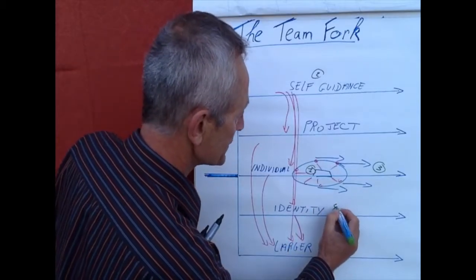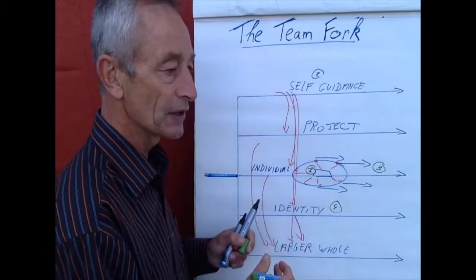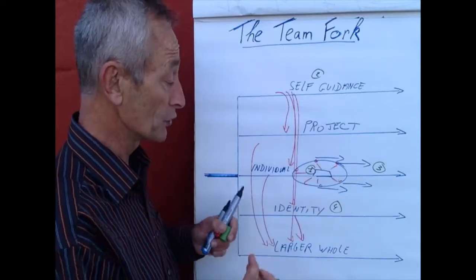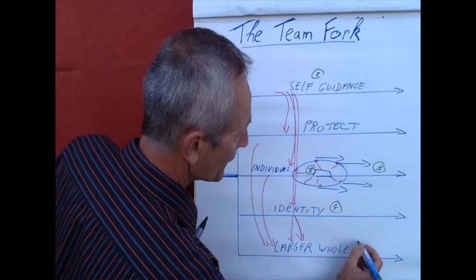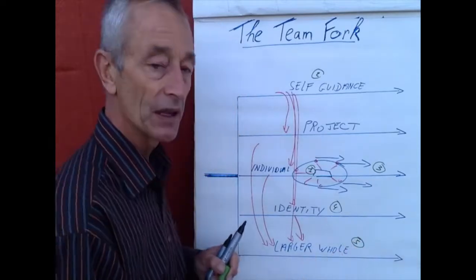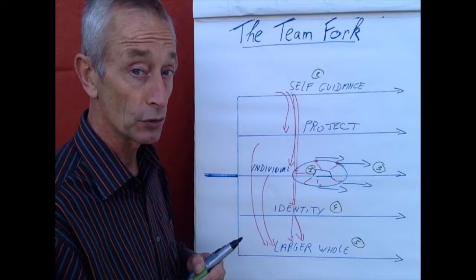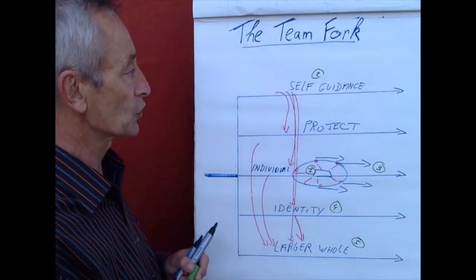The fourth step is the group identity. What does that mean for who we are and who we want to be as a group? And then the fifth step is the higher purpose. What does that mean for our contribution to the development of the larger whole?